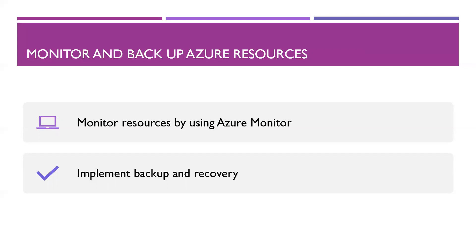Learn how to query and analyze logs, create and save queries to the dashboard, and set up alerts and actions. For example, when you create virtual machines you can receive alerts when a VM shuts down or when CPU usage goes above 80 or 70 percent. Learn to create and test alerts, create action groups, view alerts in Azure Monitor, and analyze alerts across subscriptions.